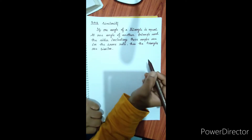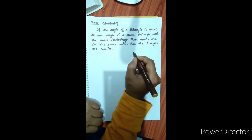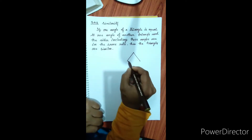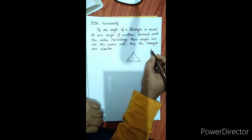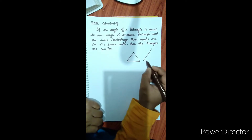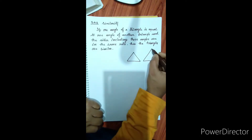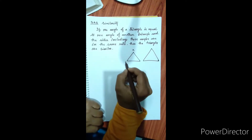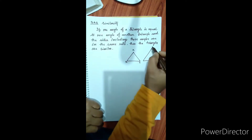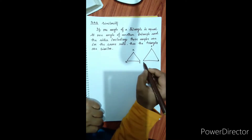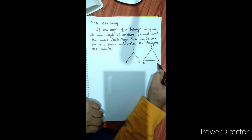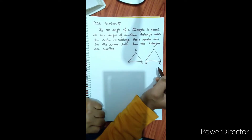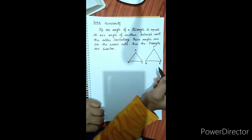Now we are going to prove this. Let us draw two triangles. Triangle ABC and triangle PQR. We will prove that these two triangles are similar.